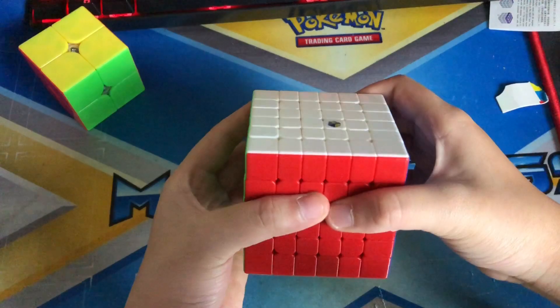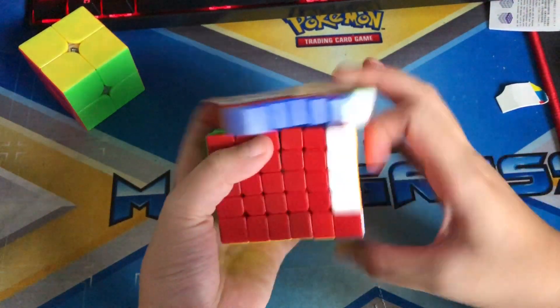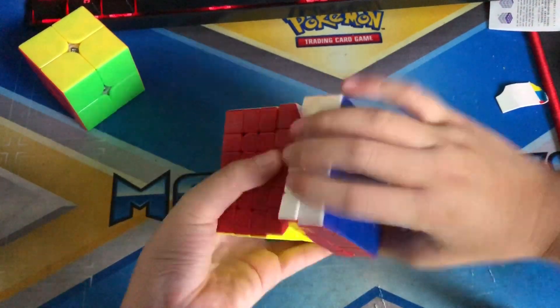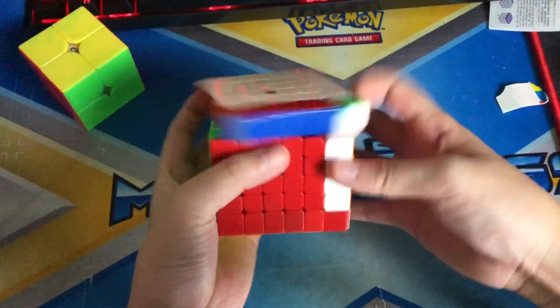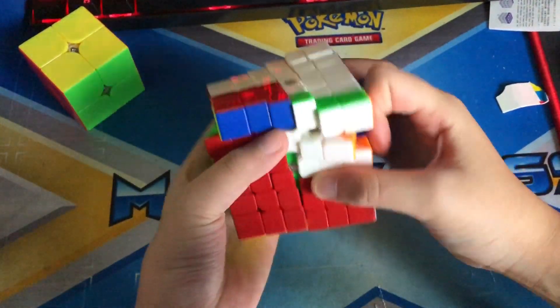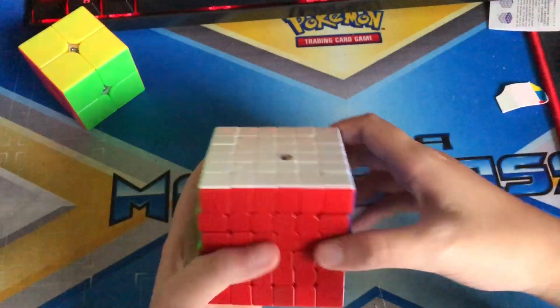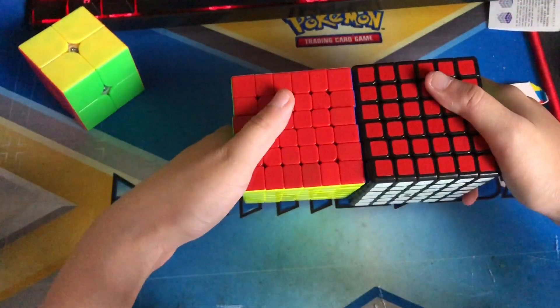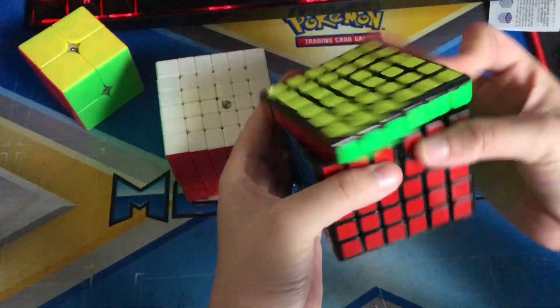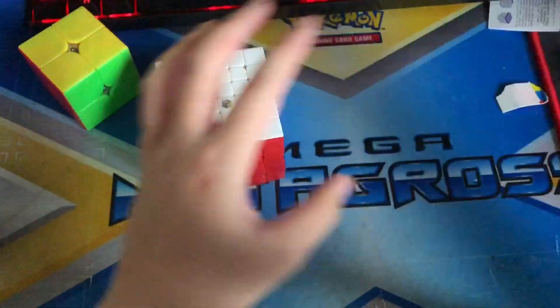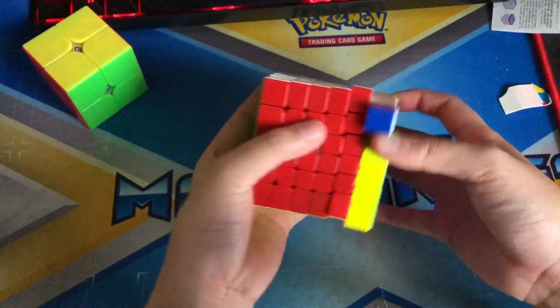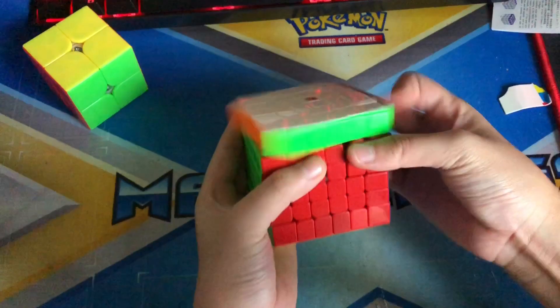Next is the Yuxin 6x6. I'm gonna do first turns. Hands down better than my other 6x6. My other 6x6 is super tight and way smaller. This doesn't turn good, no corner cutting, and it's a really bad 6x6. But this one is so fluid. It's a little bit tight on the outside but it's super good. Definitely recommend it.